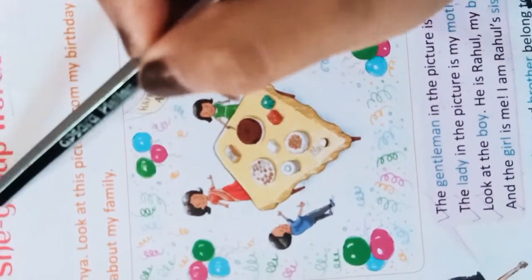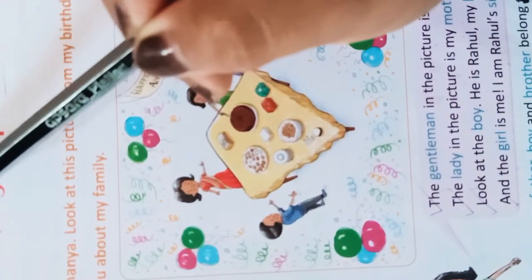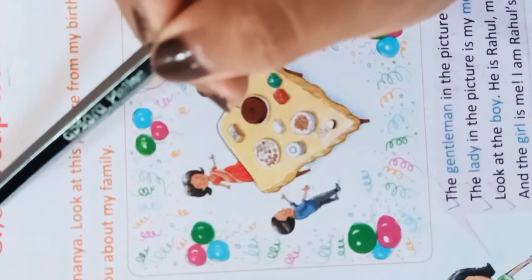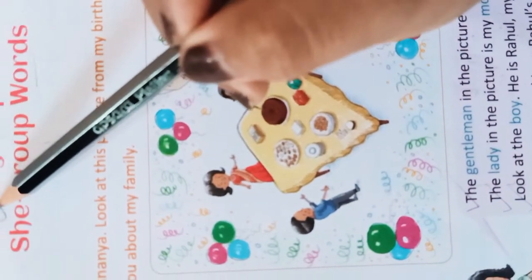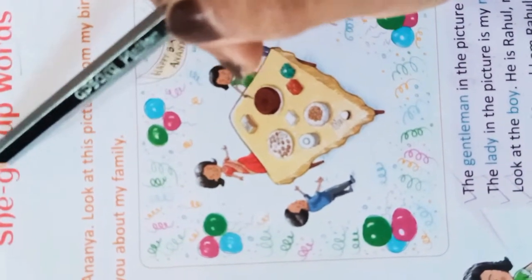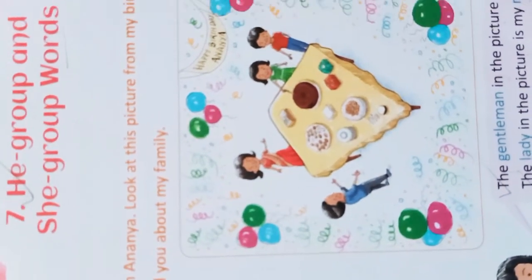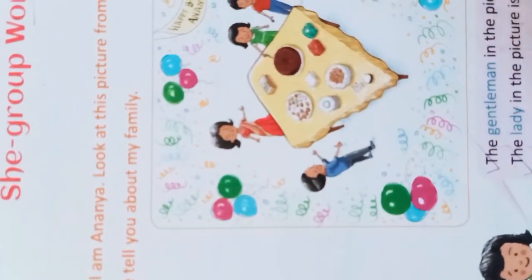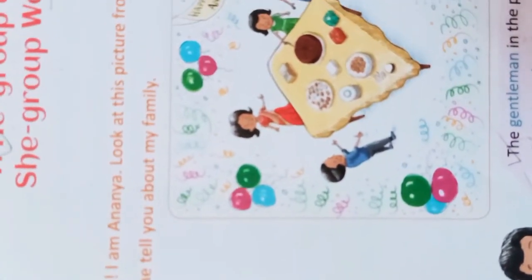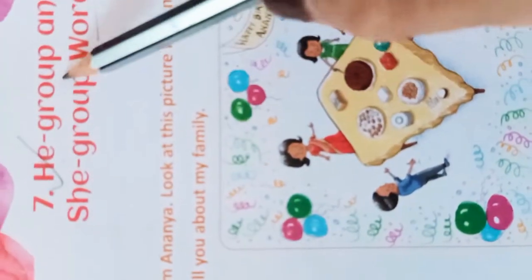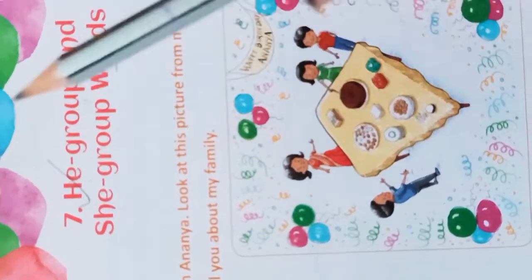सबसे पहले बोल दूँ: जैसा कि हमने पिछली class में बताया था कि 'He' जो है, वो लड़के की नाम के बदले में लगता है। मतलब लड़का कोई भी हो सकता है — छोटा सा baby boy से लेकर बड़ा boy, father, uncle, grandfather — ये सारे के सारे, इनके नाम के बदले में 'He' लगती है। तो He group words मतलब पुरुष जाति में आते हैं।